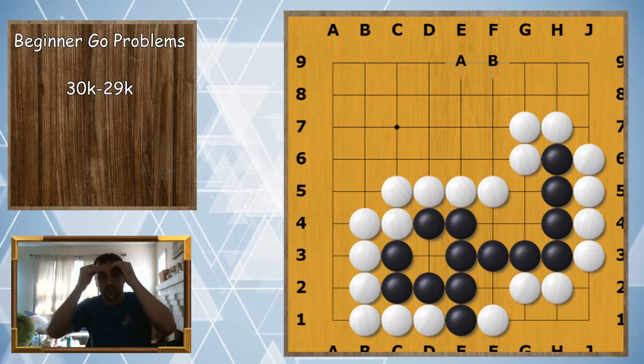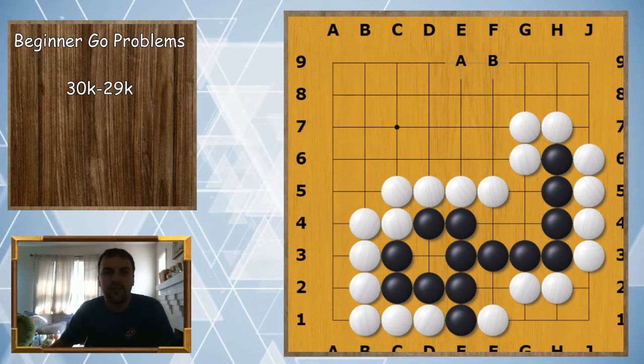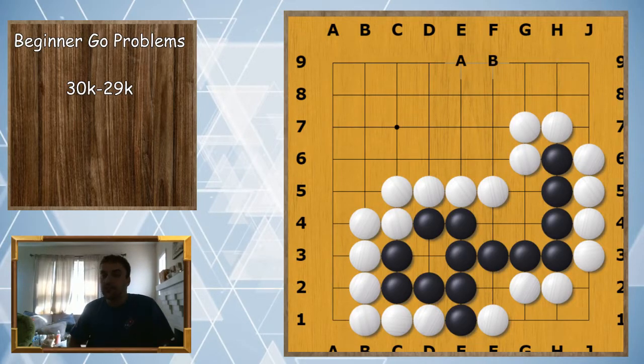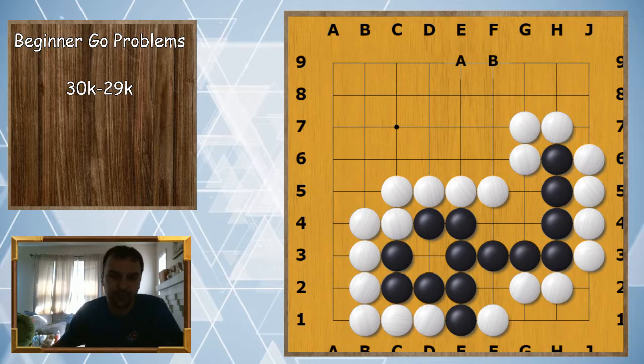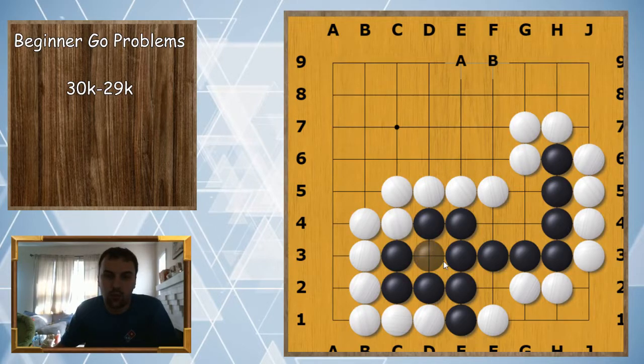Now we get to some complicated stuff. Is black alive with two eyes or is black dead? Remember you can pause the video if you need to at any of these problems. In this case black is dead or will eventually be dead. The reason is black only has one eye and black is completely surrounded. There is no way for black to break out, so black is completely dead.